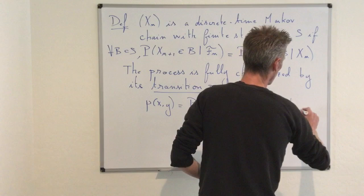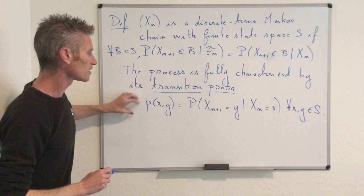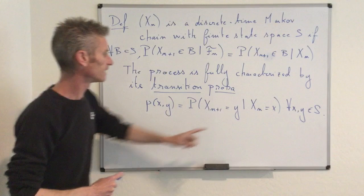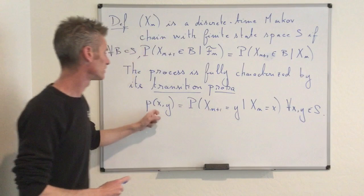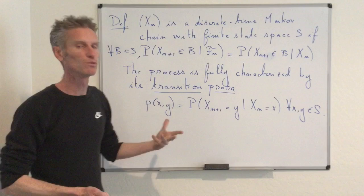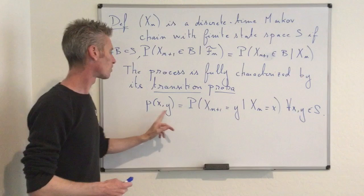Note that the quantity on the right a priori depends on n, but the quantity on the left — p(x,y) — does not depend on n. This reflects the fact that we are dealing with time-homogeneous Markov chains, meaning that the probability of going from x to y is always the same across time.